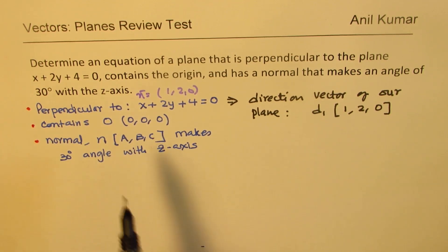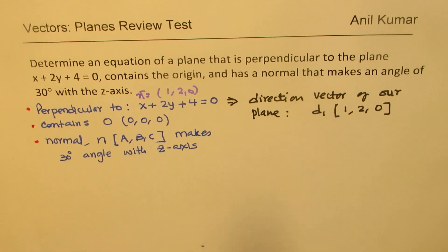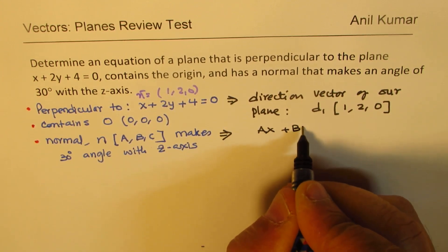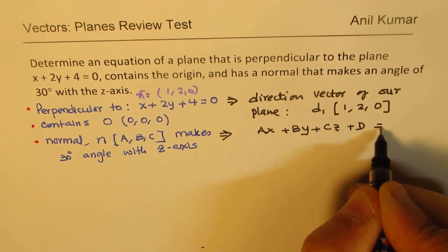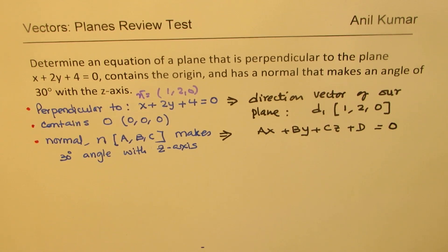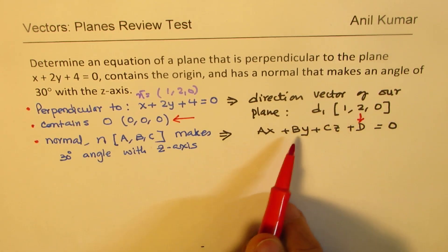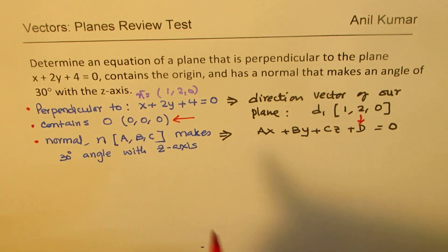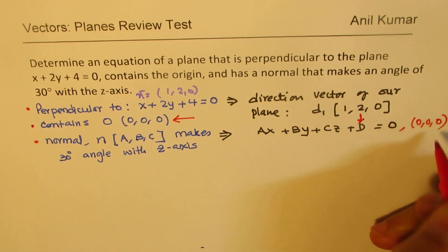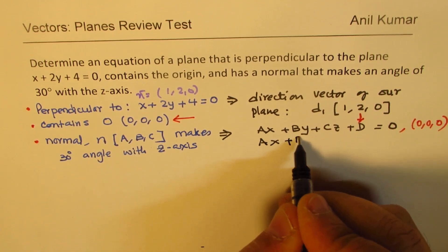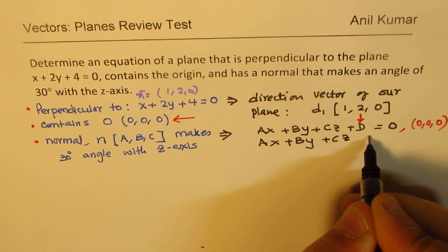Second, we assumed the normal to be a, b, c. If a, b, c is our normal, that gives the equation ax plus by plus cz plus d equals to 0. We are also given that the plane contains the origin. So if we substitute 0, 0, 0, we get d equals 0. Since it contains the origin, our equation becomes ax plus by plus cz equals to 0.